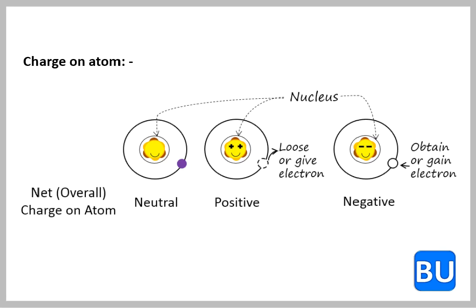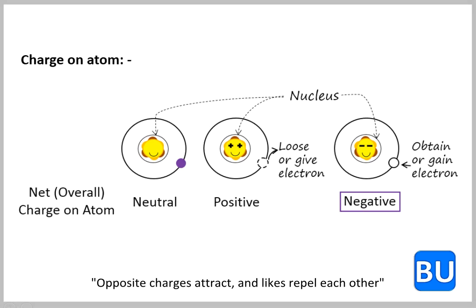Charge on atom. An atom is said to have neutral or no charge when number of protons are equal to number of electrons. An atom is said to have positive charge when atom gives or loses extra electrons. An atom is said to have negative charge when atom takes or gains electrons.